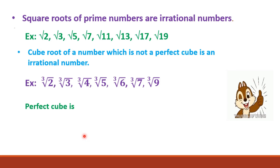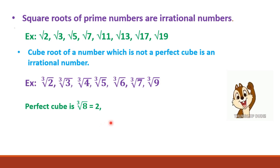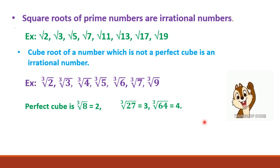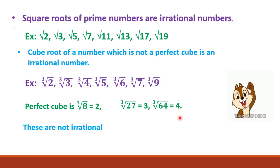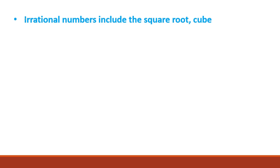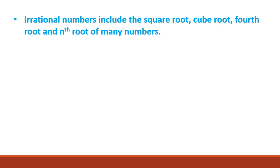A perfect cube example is cube root of 8. This is not irrational because cube root of 8 is 2, cube root of 27 is 3, and cube root of 64 is 4. These are perfect cubes and are therefore rational numbers. Irrational numbers also include the fourth root and nth root of many numbers.